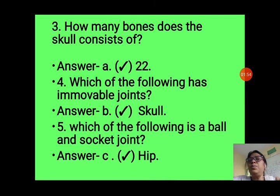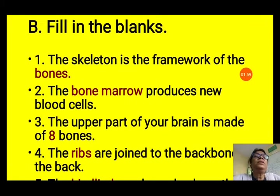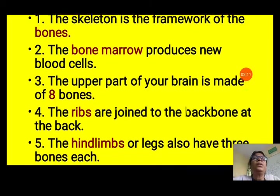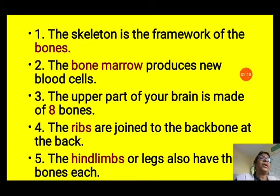Exercise B — Fill in the blanks. First: The skeletal system is the framework of the bones — fill in 'bones.' Second: The blank produces new blood cells — answer is bone marrow. Third: The upper part of your brain is made up of 8 bones — fill in '8'.